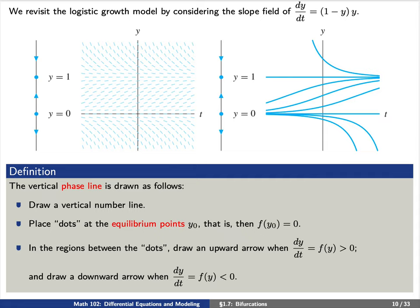We discussed the logistic growth model to get some intuition behind what's happening here. On your screen you see phase diagrams, but you also see what are called phase lines. To draw these, we go as follows: first, draw a vertical number line representing the y-axis; second, place dots at the equilibrium points y₀; and third, in the regions between the dots, either draw an upward or downward arrow depending on whether f(y) is positive or negative in that region.